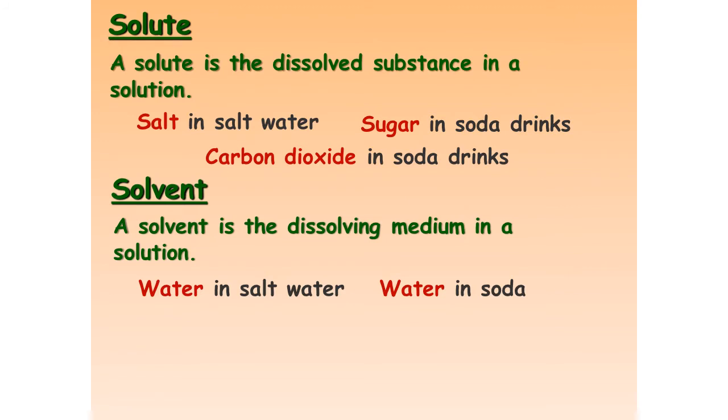A solute is the substance that is dissolved in the solution. For example, it's the salt in the water or the sugar in a Coke or the carbon dioxide in a Coke. So it's the thing that's being dissolved. The solvent is what is doing the dissolving. So it's water in salt water or water in soda. Nine times out of ten, for our purposes, the solvent is usually going to be water. Water is known as the universal solvent.